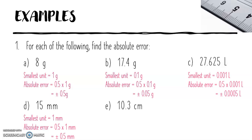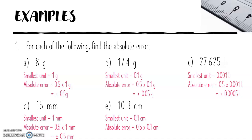E: 10.3 centimetres. The smallest unit is 0.1 centimetre, so the absolute error is 0.5 times 0.1 centimetre, which equals plus or minus 0.05 centimetres.